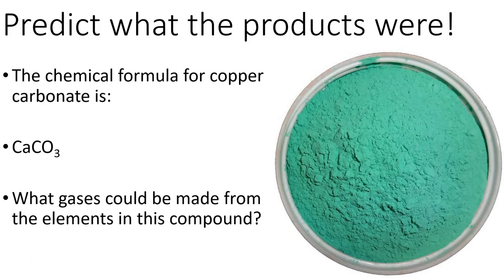The chemical formula for copper carbonate is CuCO3. So what gases could be made from the elements in this compound? Pause the video and have a go. We haven't come across any gases that have calcium in, so we're going to ignore that. But with CO3, there are two options: either we can make carbon dioxide, which is CO2, or oxygen, which is O2. Those are two options.